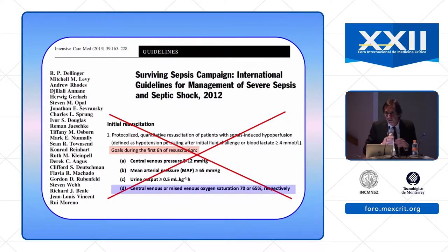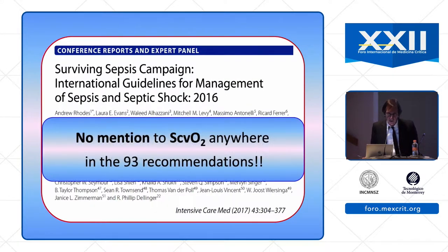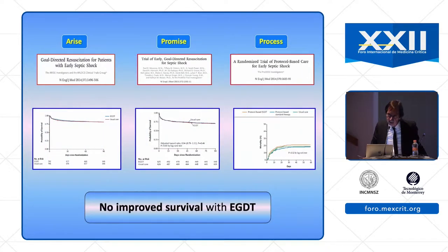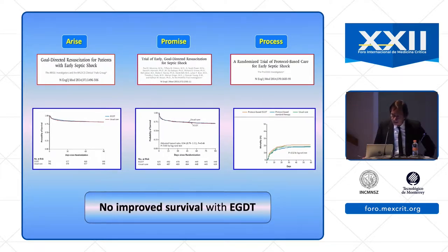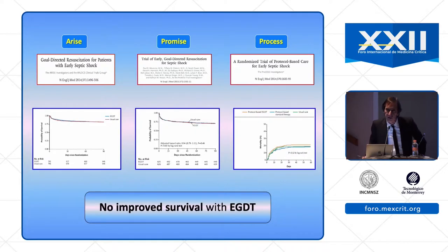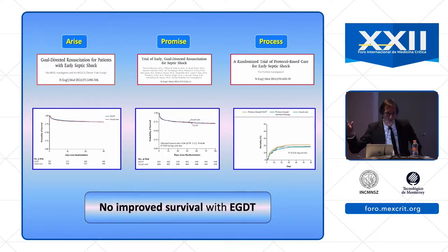However, this recommendation disappeared in the last version of the Surviving Sepsis Campaign guidelines, which do not recommend measuring ScvO2 anywhere in their 93 recommendations. This is probably because of three important multicenter randomized controlled trials comparing early goal-directed therapy to standard care using ScvO2, which showed no difference between the groups.